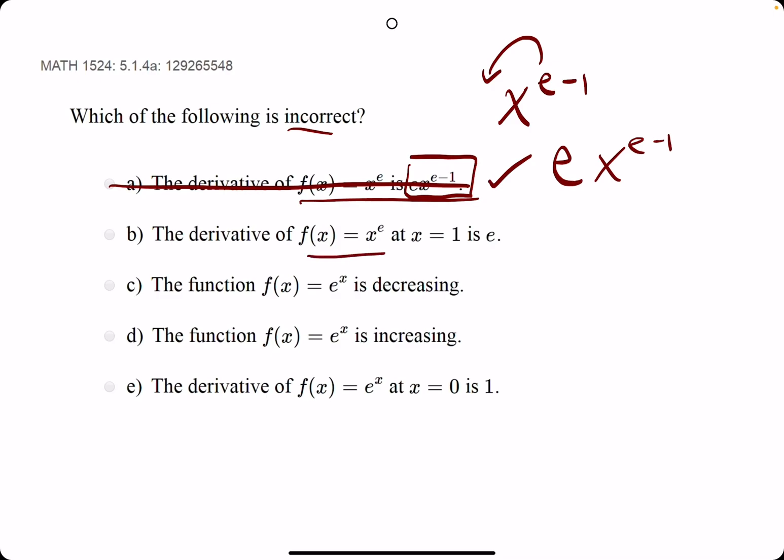The derivative of x to the e at x equals one is e. So what we try is, well, the derivative of x to the e we actually found right here. So we plug in one for x in this derivative. So one goes in place of x. We have e times one to the e minus one. One squared is one.